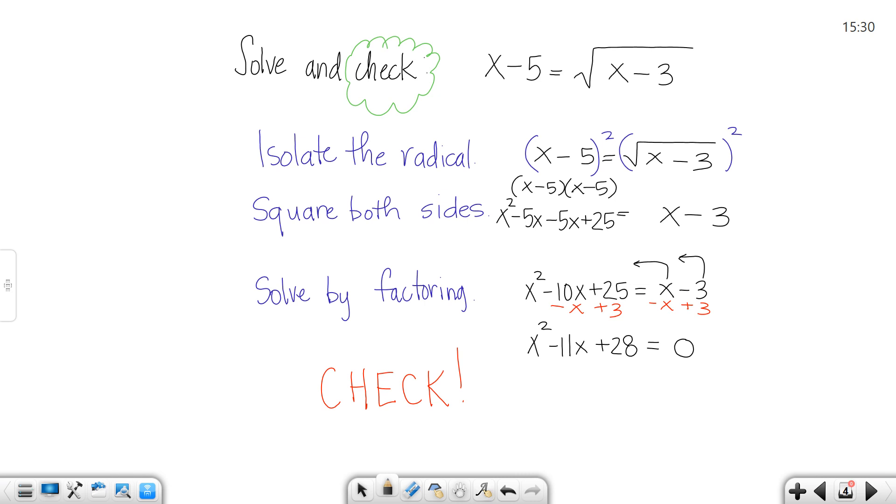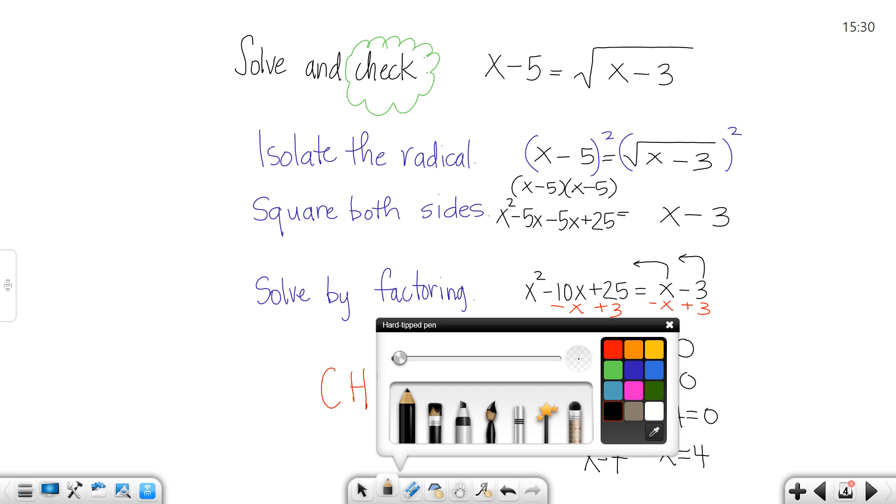So when I move the x over, it changes signs. When I move the 3 over, it changes signs and that gives you something easy to factor. The factors of 28 that add to give me 11 are 7 and 4. They're going to be the same sign, both negative. I'll set both of those pieces equal to 0 and I'll solve them out. So x would equal 7 and x would equal 4, and those are not my answers.